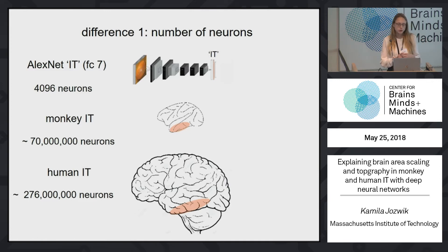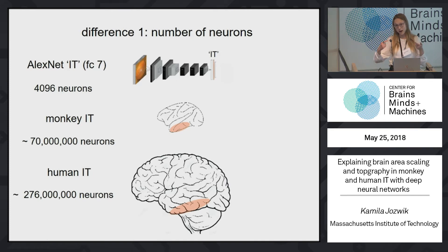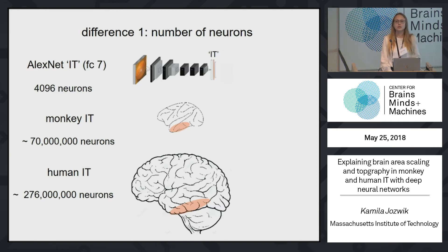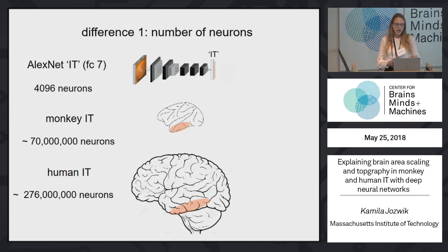We can also try to account for the layer sizes to match the sizes of the areas in the brain, and build a model for a monkey and for a human to account for species differences — having a monkey deep net and a human deep net and looking at how they may model monkey and human brain differently.